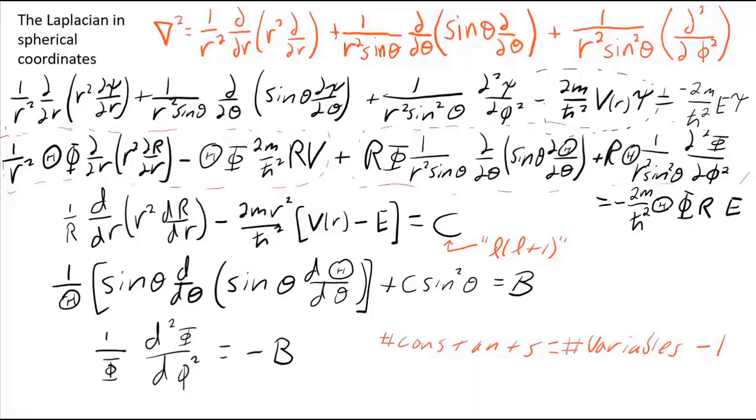I can't give you a really good reason right now for why you would want to rewrite the constant c as a constant l times a constant l plus one. Even perfectly valid mathematically, driven by hindsight, it will make for a less messy solution. And b is a constant squared. All constants are some constant squared, and we're going to call that constant m sub l. It simply leads to a less messy solution to do this. Can you solve these equations if you don't make these changes? Well yes, they'll just be messier.